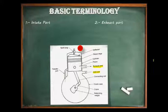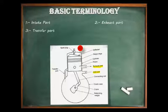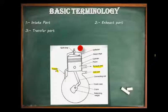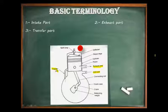Third is transfer port. A transfer port is simply a channel in the block of a two-stroke engine. It connects the engine crankcase with the engine combustion chamber. The transfer port is used to transfer the air-fuel mixture in the case of an SI engine, or just air in the case of a CI engine, from the crankcase to the combustion chamber.